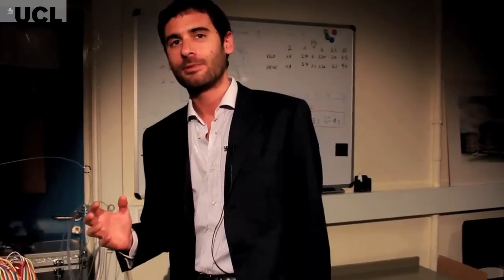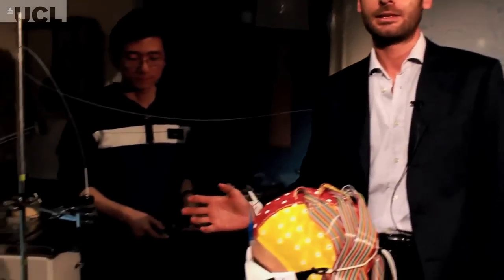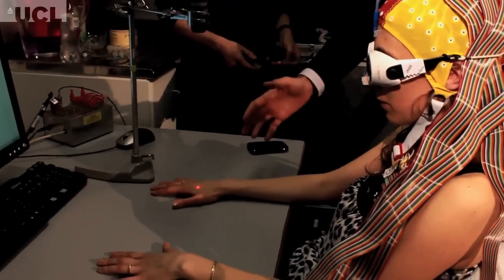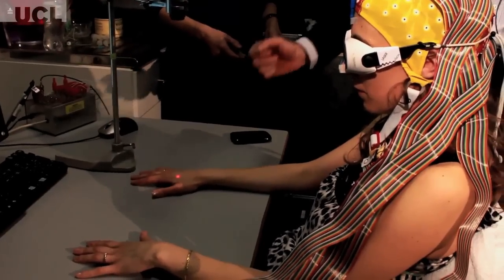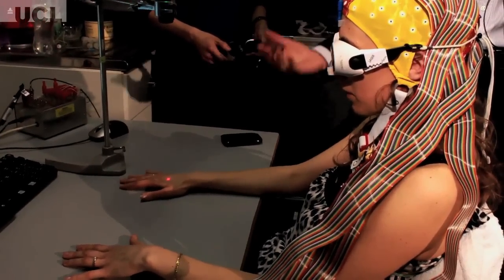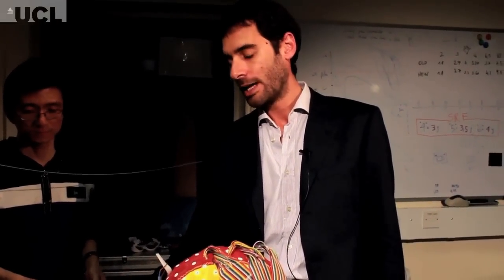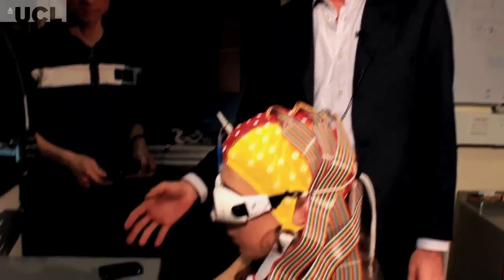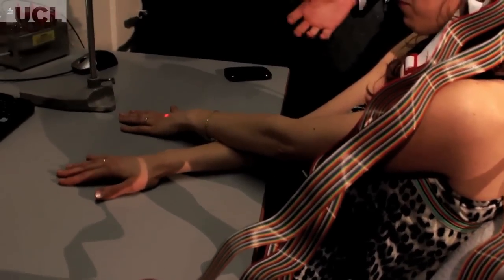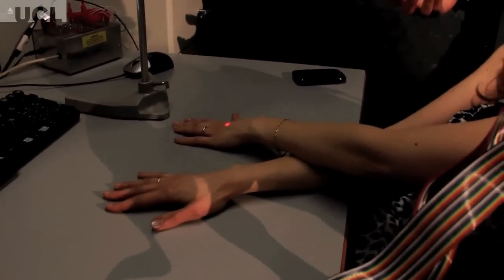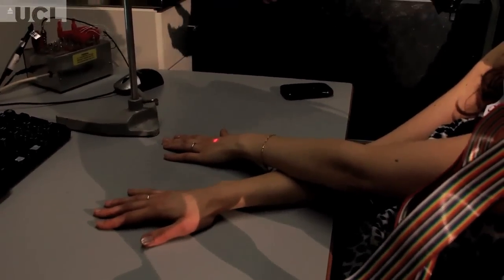It is well known that if you apply painful stimuli to the hand of a healthy subject — like using this laser heat — you get some pain, and the stronger the stimulus the more intense the pain perceived. What we found out is that if you deliver exactly the same stimuli always on the dorsum of the hands but when the hands are crossed over the midline, like in this case,